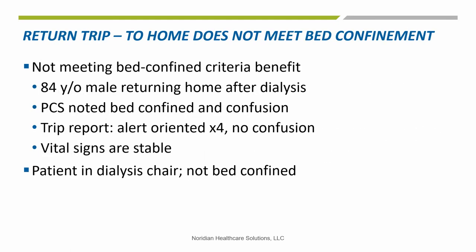The next two slides are examples for bed confinement and specialty care transport. This example shows a return dialysis trip with a PCS that noted bed confined and that the patient is confused — an 84-year-old male returning home after dialysis. The PCS noted bed confined and confusion; however, the trip report showed alert, oriented times 4, no confusion, and vital signs stable. The patient was found in a dialysis chair, therefore does not meet all three criteria of a true bed-confined beneficiary. The patient was in a dialysis chair, not bed confined.